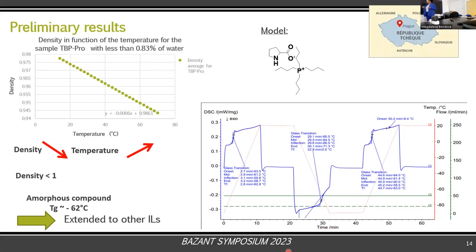I started this part last year. First I did some tests with a model ionic liquid — tetrabutylphosphonium propionate — which is also a bio-based ionic liquid. We did measurements of the density and the phase transition. On this graphic for the density, you can see that the density decreases when the temperature increases, and the density is less than water. For the phase transition, this component has only one phase transition temperature, around minus 60 degrees. All these methods have been extended to the other ionic liquids.